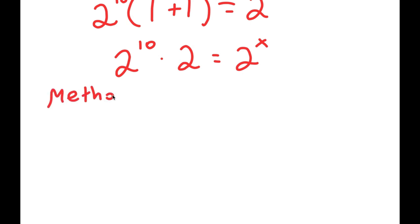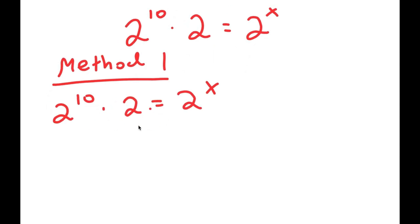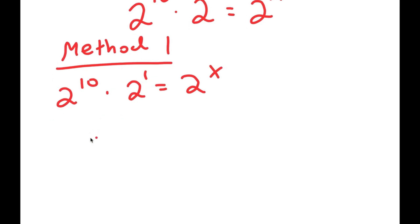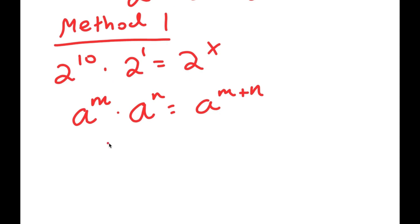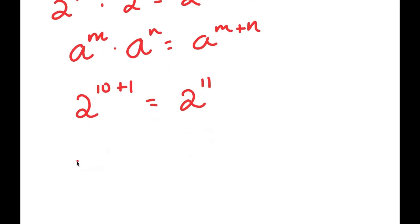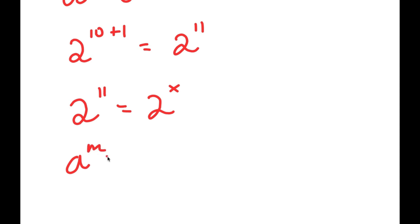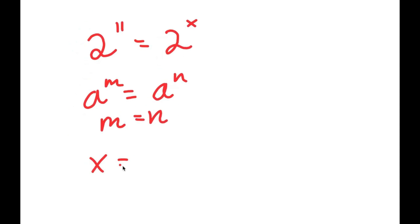For method 1, I have 2 to the power of 10 times 2 is equal to 2 to the power of x. I'm going to rewrite 2 as 2 to the power of 1. Now, using the property a to the power of m times a to the power of n equals a to the power of m plus n, we get 2 to the power of 10 times 2 to the power of 1 equals 2 to the power of 11. So 2 to the power of 11 equals 2 to the power of x, which means x is equal to 11.